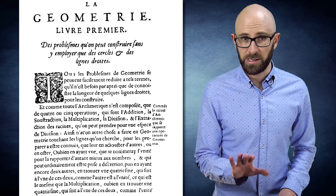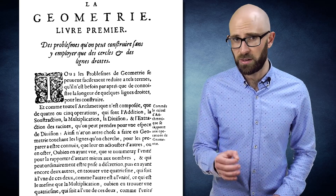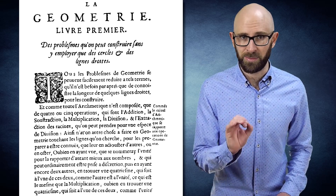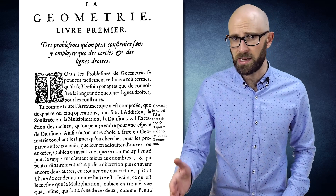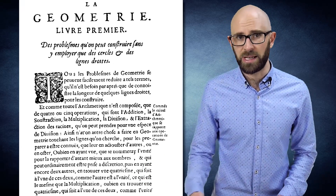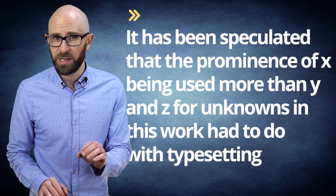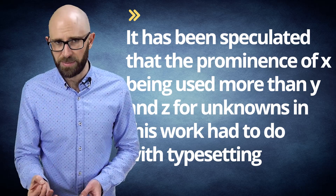Specifically, in his landmark 1637 work La Géométrie, Descartes solidifies the movement to symbolic notation by instituting the convention of using lowercase letters at the beginning of the alphabet for known quantities — for example, a, b, and c — and using those at the end of the alphabet for unknown quantities — for example, z, y, and x. So why did he use x more than y and z for the unknowns? Nobody knows for sure, but it has been speculated that the prominence of x had to do with typesetting.